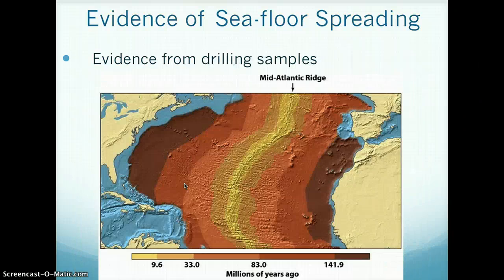A final piece of evidence of seafloor spreading is from drilling samples. Scientists have found that rock samples further from a mid-ocean ridge are older than ones found closer to a mid-ocean ridge. This proves that new ocean floor is rising to the crust at a mid-ocean ridge and pushing the old ocean crust further away. This image shows that the further away from the center you are, the older the seafloor is. The center in this image is located on the mid-ocean ridge.